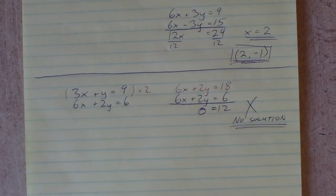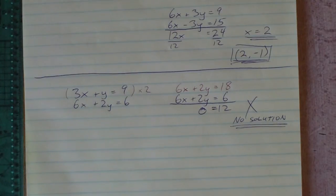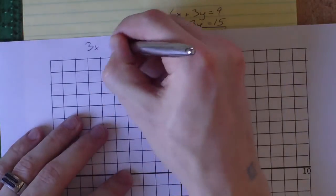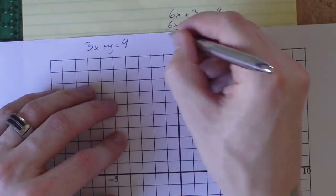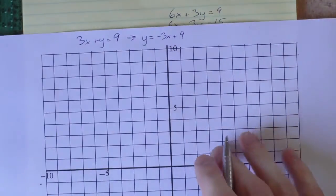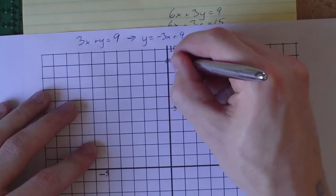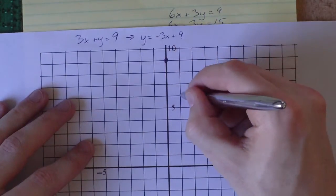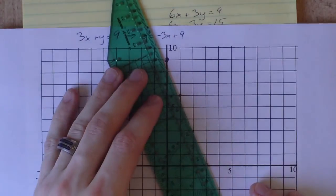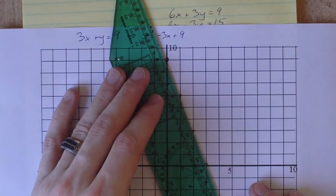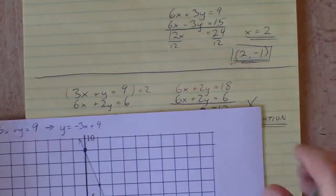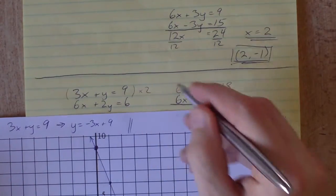Let's see what these equations look like if we graph them. We started with 3x plus y equals 9. If we solve for y, we get y equals negative 3x plus 9. Let's graph that: y-intercept of 9, slope of negative 3.